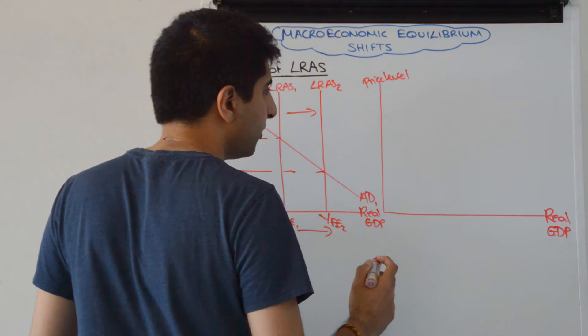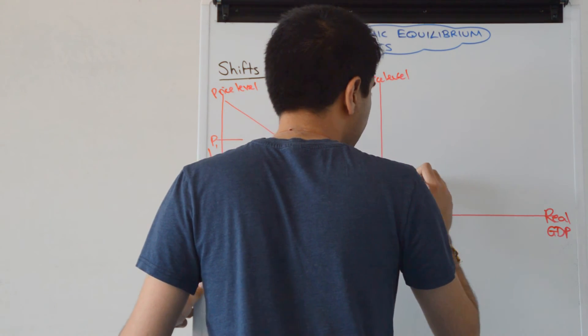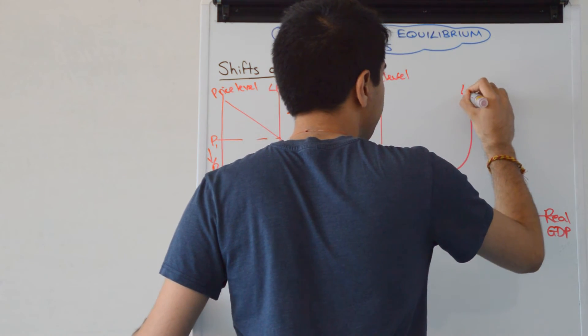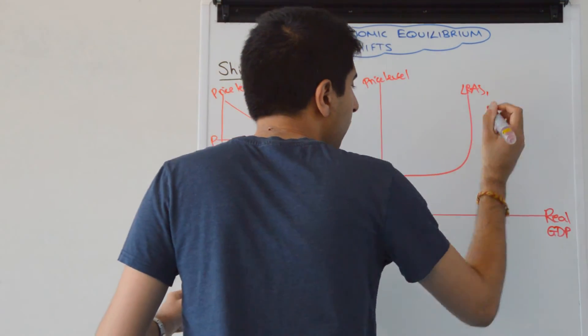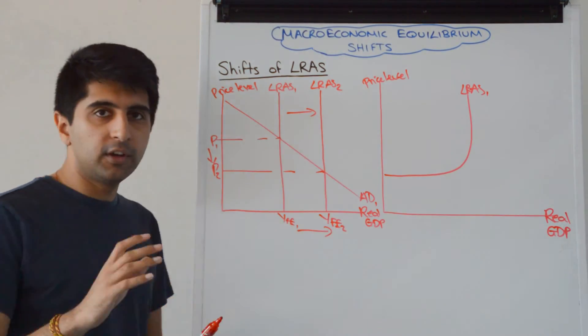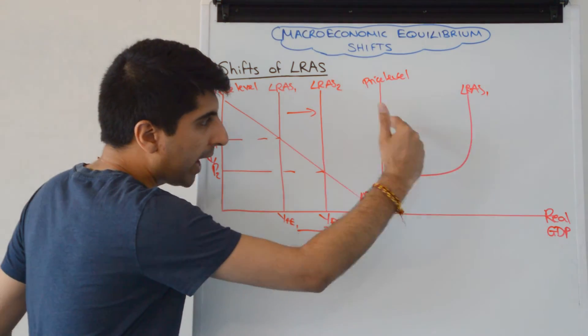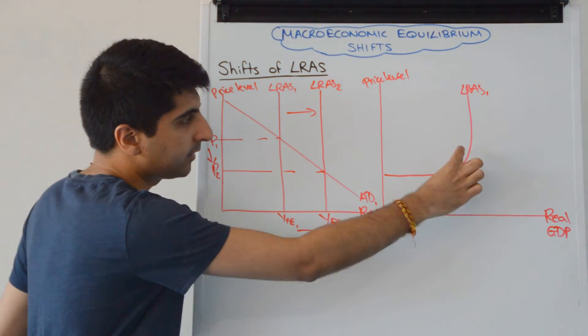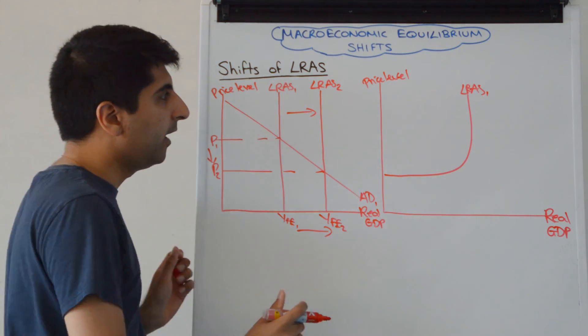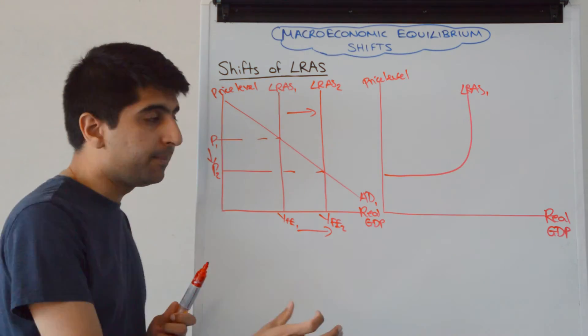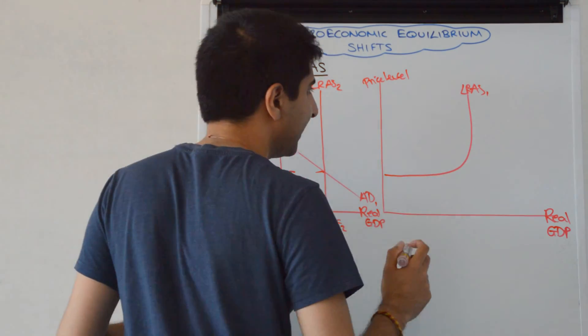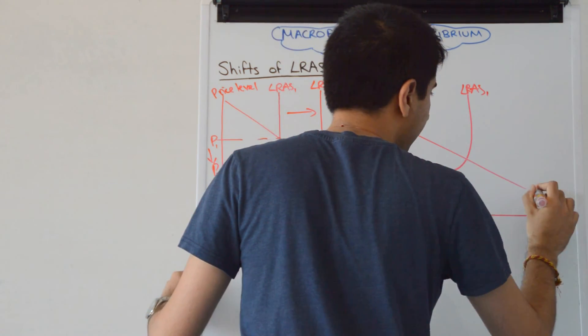You've also got the Keynesian interpretation, so remember, the Keynesian LRAS curve looks like that. Now, what I'd recommend, to get this one drawn correctly, make sure your AD curve is cutting LRAS in the bendy part, in the sweet spot here. And then when we shift LRAS, you'll have four different real GDP levels on your X axis here. So let's get AD looking something like that.